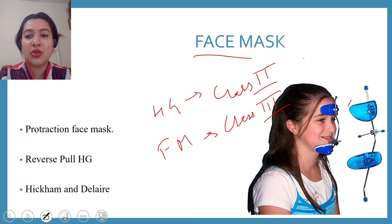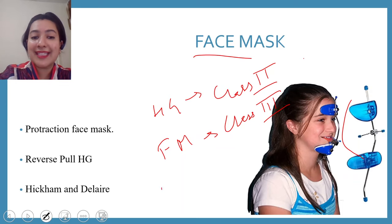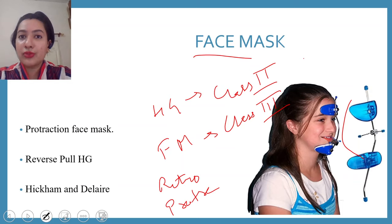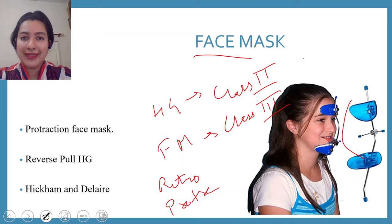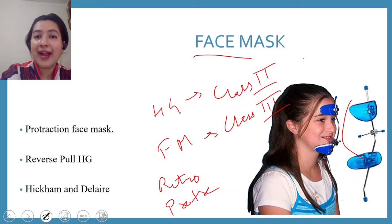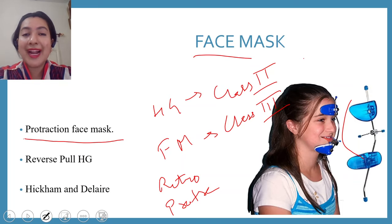In a class 3 patient, the profile is concave. The etiology of class 3 — whether genetic or due to external factors — presents itself with a retrognathic maxilla and a protracted mandible, or a combination of both. Assuming the class 3 is because of a retruded maxilla, we give a face mask.